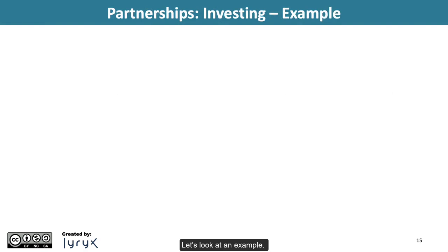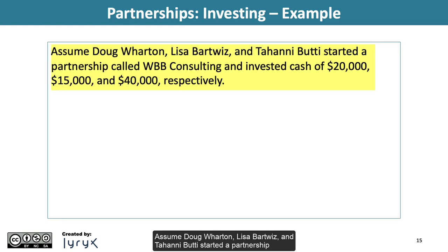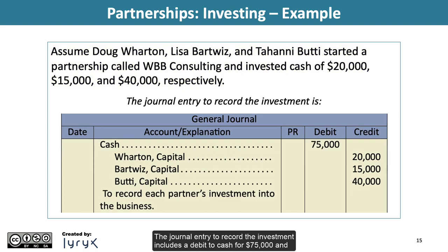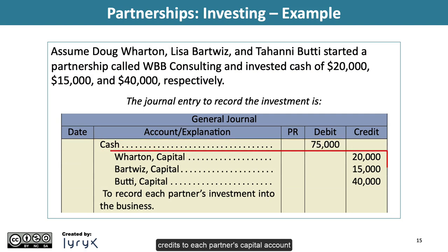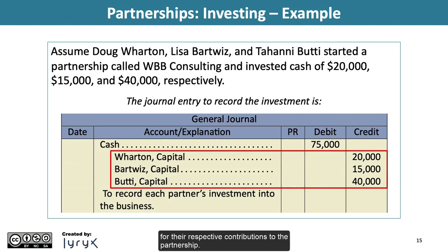Let's look at an example. Assume Doug Wharton, Lisa Bartwiz, and Tahani Beauty started a partnership called WBB Consulting and invested cash of $20,000, $15,000, and $40,000, respectively. The journal entry to record the investment includes a debit to cash for $75,000 and credits to each partner's capital account for their respective contributions to the partnership.